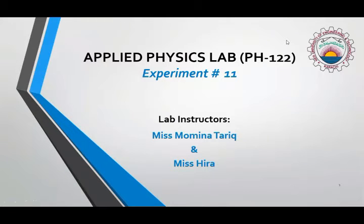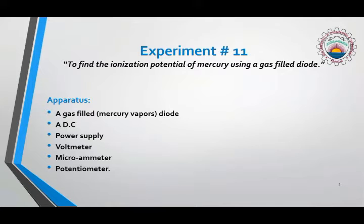Assalamualaikum, this is experiment number 11 of your Applied Physics Lab and I am your lab instructor Misera. The object of experiment number 11 is to find out the ionization potential of mercury using a gas filled diode.